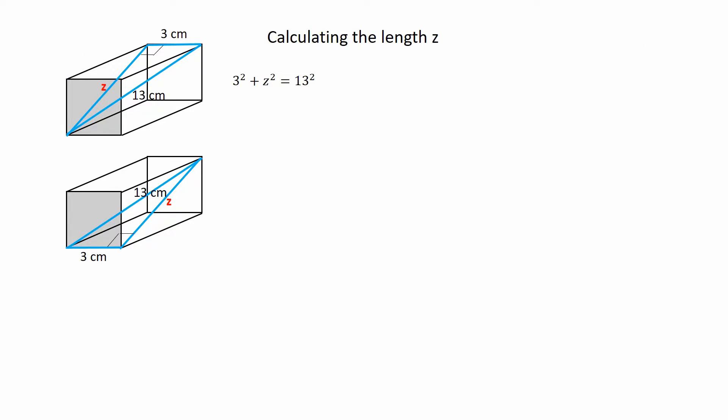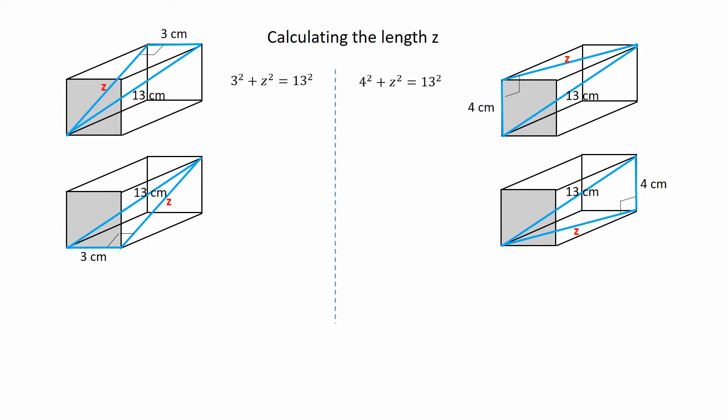Consider the blue triangles and apply Pythagoras to give 3 squared plus z squared equals 13 squared. Both triangles on the right have different dimensions, giving 4 squared plus z squared equals 13 squared. Calculating the squares gives 9 plus z squared equals 169 on the left, and 16 plus z squared equals 169 on the right. Subtracting 9 from both sides gives z squared equals 160, and on the right gives z squared equals 153.